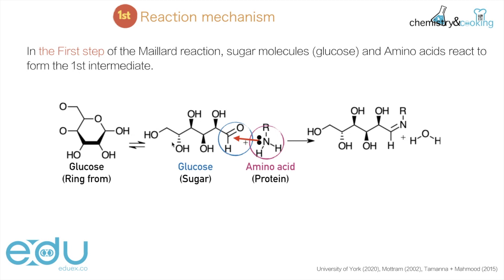So we have the sugar and the protein reacting together under heat to form an N-substituted glycosylamine, and here it is the C double bond N that is the main functional group, and we have also produced water.